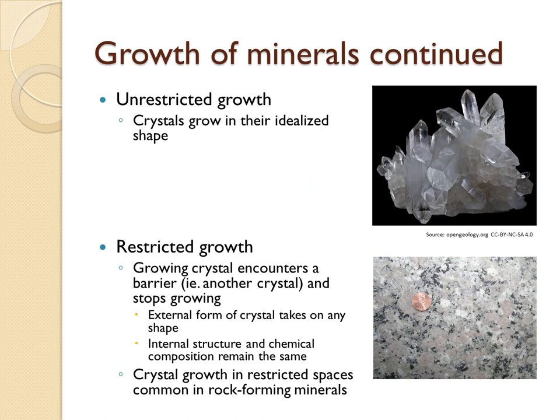If minerals can grow in an unrestricted environment, they will tend to grow to their idealized shape or form a nice crystal-like structure. Most commonly though, minerals grow in a restricted environment — the mineral grows until it encounters another barrier such as another crystal, and then it will stop growing. In this case the crystal structure may take on any shape, or the shape of the constraints that surround it.